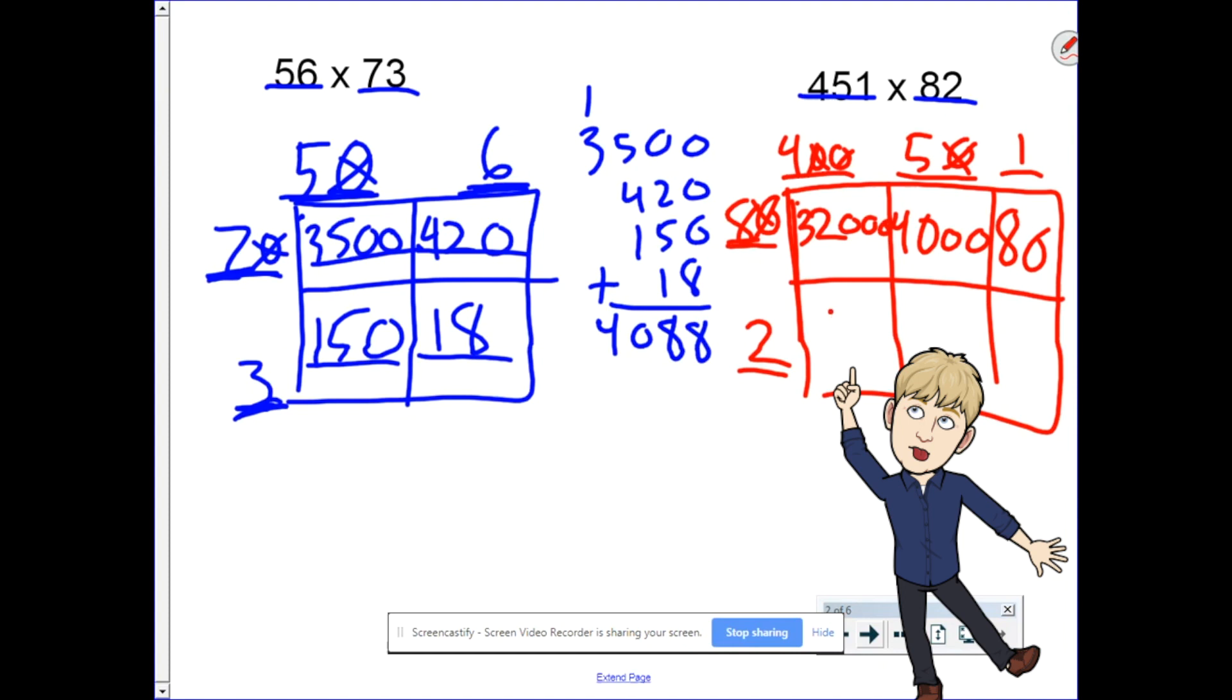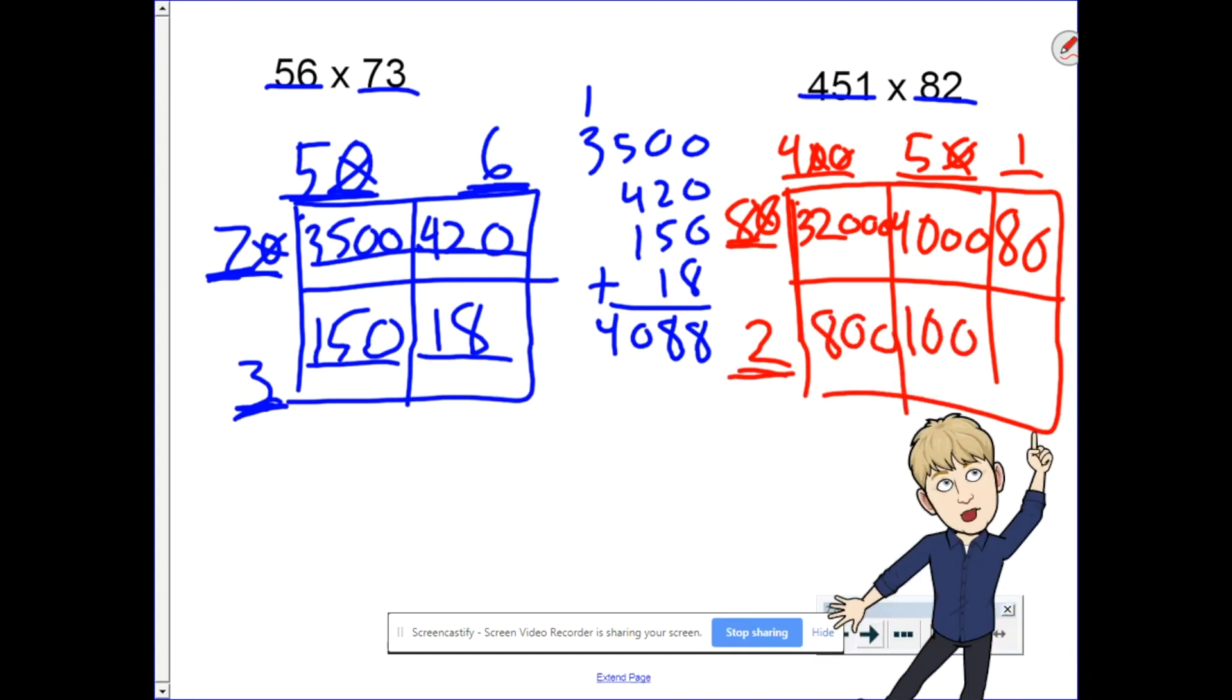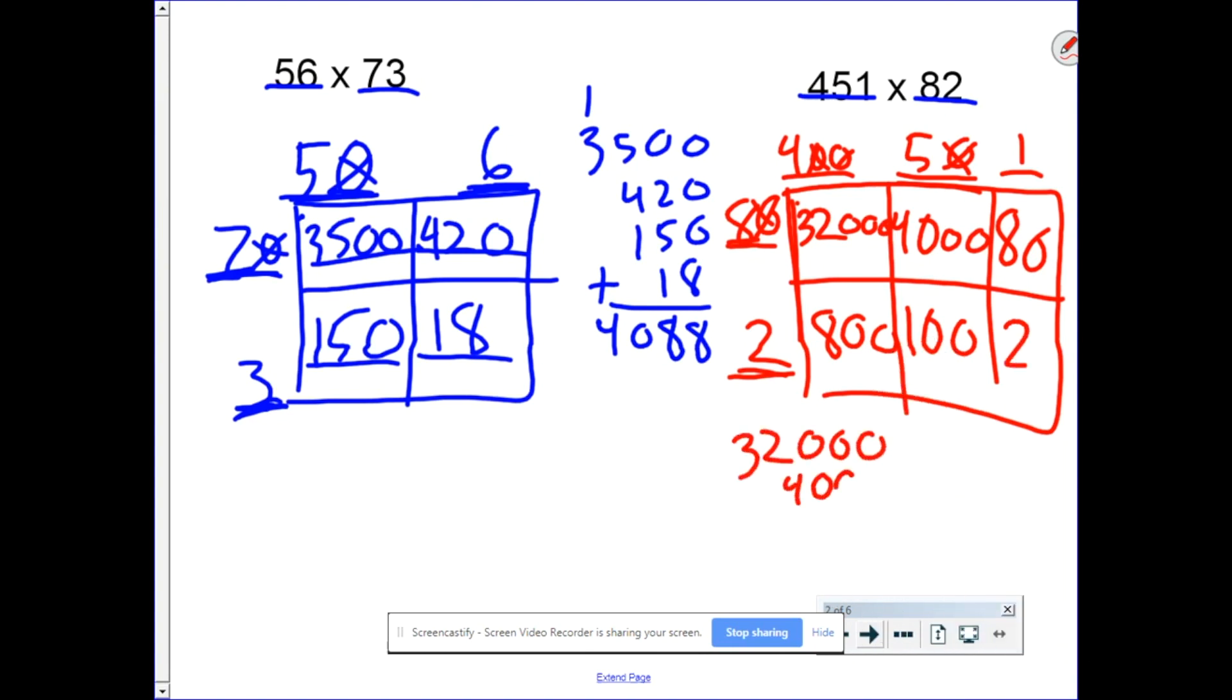400 times 2 is 800. 2 times 5 is 10. Tack on the zero, that's 100. And finally, 2 times 1 is 2. Let's add those up. 32,000, 4,000, 800, 100, 80, and 2.